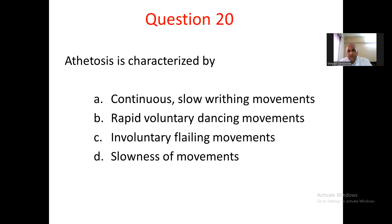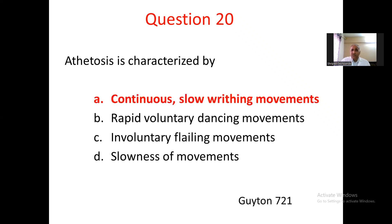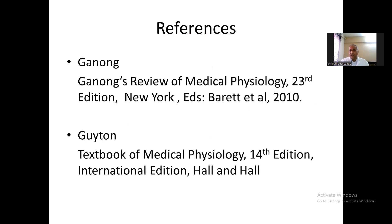Question number 20. Athetosis is characterized by: A. continuous slow writhing movements, B. rapid voluntary dancing movements, C. involuntary flailing movements, D. slowness of movements. Bradykinesia or hypokinesia refer to slowness of movements. Involuntary flailing movements are present in hemiballismus — ballistic movements. Rapid voluntary dancing movements are voluntary, not characteristic of athetosis. The continuous slow writhing movement is the correct response. Hence athetosis is characterized by continuous slow writhing movements — A is the correct response. Referenced from Ganong's Review of Medical Physiology, 23rd edition, 2010 and Guyton's Textbook of Medical Physiology, 14th edition, 2021.